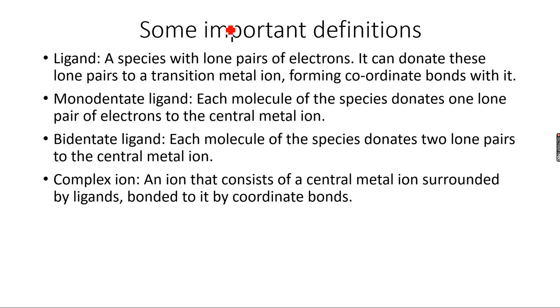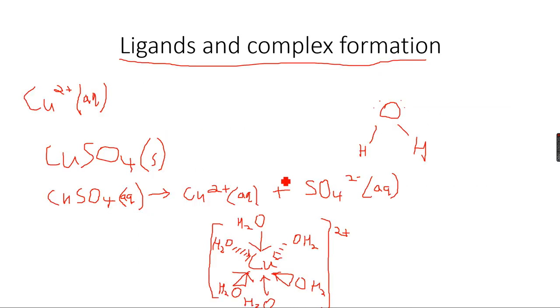Monodentate ligand, each molecule of the species donates one lone pair of electrons to the central metal ion. So a monodentate ligand is basically, as we saw in this case, this oxygen atom has two lone pairs, but each H2O molecule donated only one lone pair to the central metal ion. So H2O is a monodentate ligand and H2O always only donates one lone pair. Just remember that, it does not donate its second lone pair, it only donates one lone pair of electrons to the central metal ion to form coordinate bonds each molecule. So it's a monodentate ligand because each molecule has donated only one lone pair of electrons.